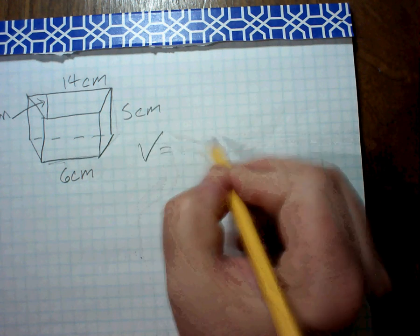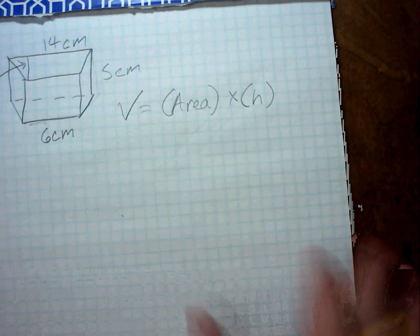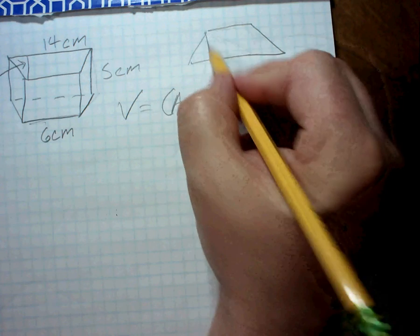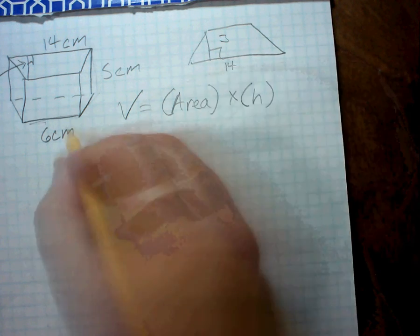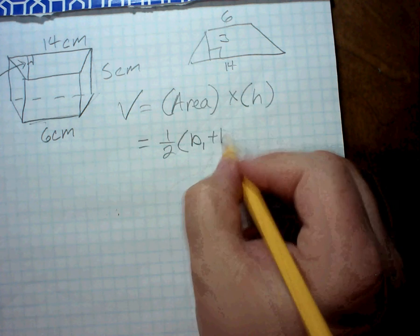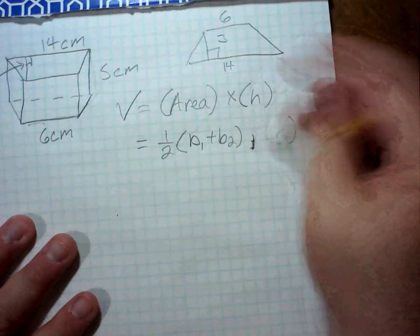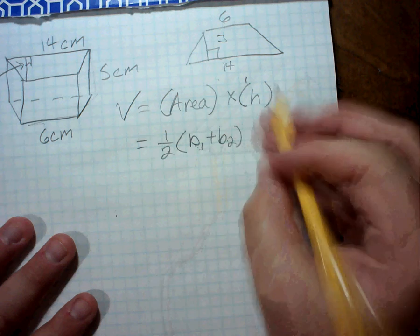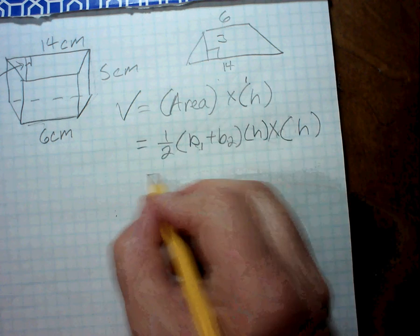So the volume of this is going to be the area of the base times the prism height. Well, the base is a trapezoid. So if I were to sketch this trapezoid out, remember that the altitude height is 3. The long part of the trapezoid is 14. The short part of the trapezoid is 6. And so the area of a trapezoid is 1 half times base 1 plus base 2. And then that has to be multiplied by the prism height. Oh, wait. My apologies. I almost forgot. The area of this is 1 half times the sum of the bases times the height of the trapezoid. And then that all has to be multiplied by a different height, the height of the prism. So that's going to be the confusing part.